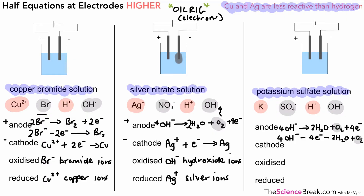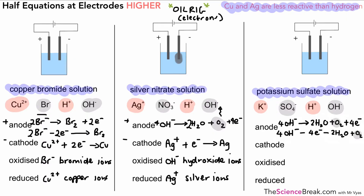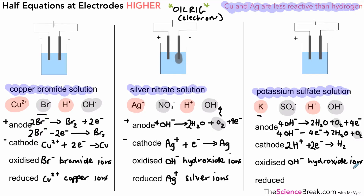Oxygen gas is produced and given off at the electrode. At the cathode, hydrogen is going to be produced because potassium is more reactive than hydrogen. We've got hydrogen ions gaining electrons: 2H⁺ plus two electrons gives H₂. What's being oxidized? Oxidation is loss — it's the hydroxide ions losing electrons, so hydroxide ions are being oxidized. Reduction is gain of electrons — the hydrogen ions are being reduced.